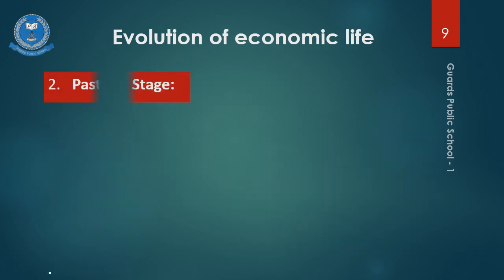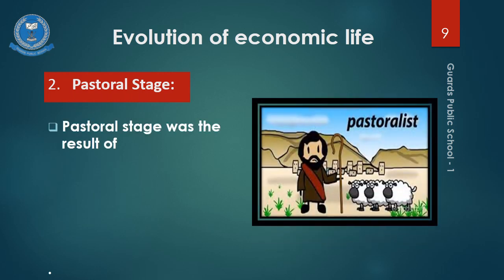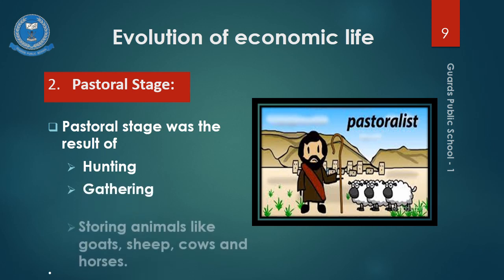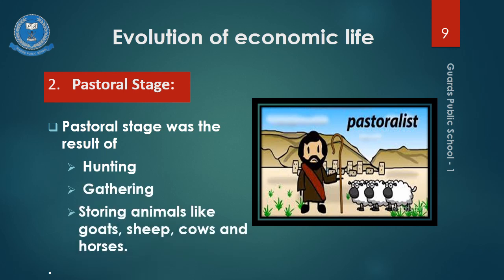Second stage is the pastoral stage. The existence of pastoral stage was the result of hunting, gathering and storing animals like goats, sheep, cows and horses. Water and grass at least was necessary to feed these animals. So man started roaming from place to place with his cattle in search of grass and water. That is why this period is called pastoral stage. The tribes, private property, precious stones, metals, food, clothing, animals and transportation were the main features of pastoral stage. The man who owned a large number of animals in his cattle was said to be a rich and wealthy person.